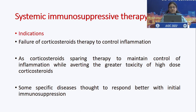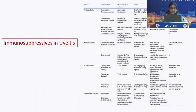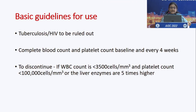Systemic immunosuppressive therapy is used when corticosteroid therapy fails to control inflammation, and as corticosteroid-sparing therapy to maintain control while averting the toxicity of high-dose corticosteroids. Common indications include Behçet's disease, sympathetic ophthalmia, birdshot retinochoroiditis, serpiginous choroiditis not associated with tuberculosis, and necrotizing scleritis. An important guideline in India is that tuberculosis is rampant — TB and underlying HIV must be ruled out before starting any immunomodulatory drug. Complete blood counts and platelet counts must be repeated every four weeks.